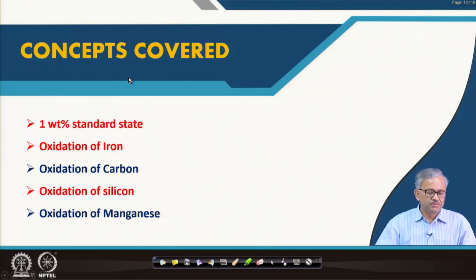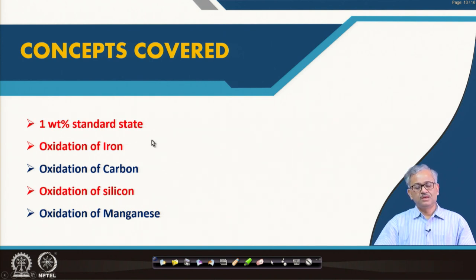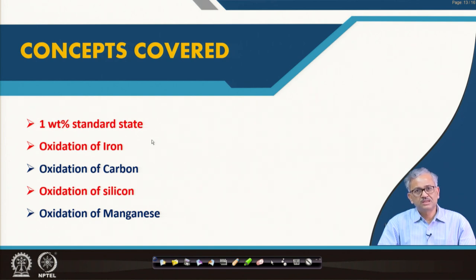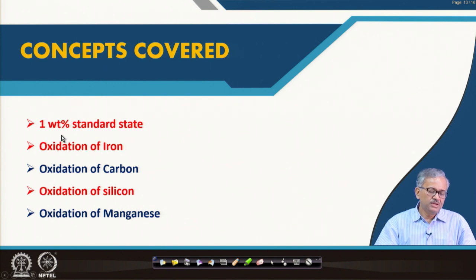In this lecture, we will talk about some very important reactions relevant for steelmaking and their reaction equilibria. The first concept to be covered is the 1 weight percent standard state. When considering reaction equilibrium in liquid steel, the impurity percentage hardly exceeds 1 weight percent — most impurities are within 1 weight percent.